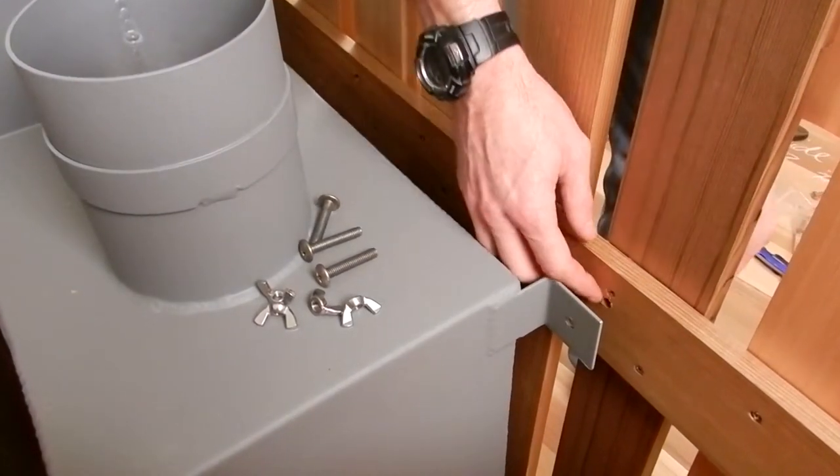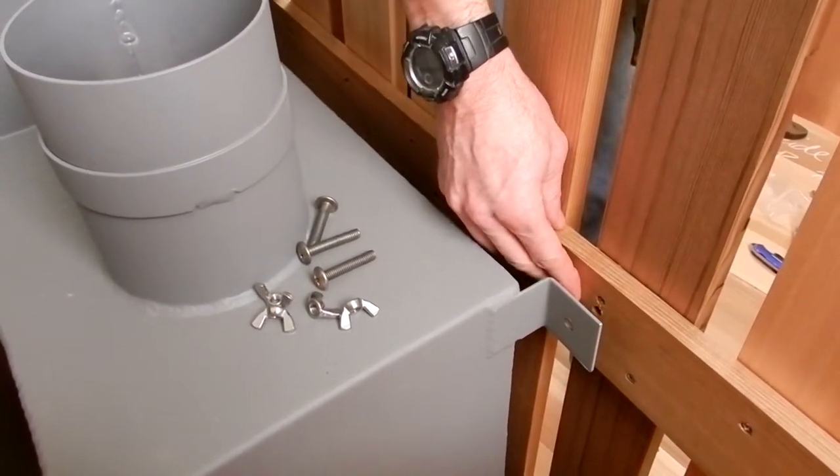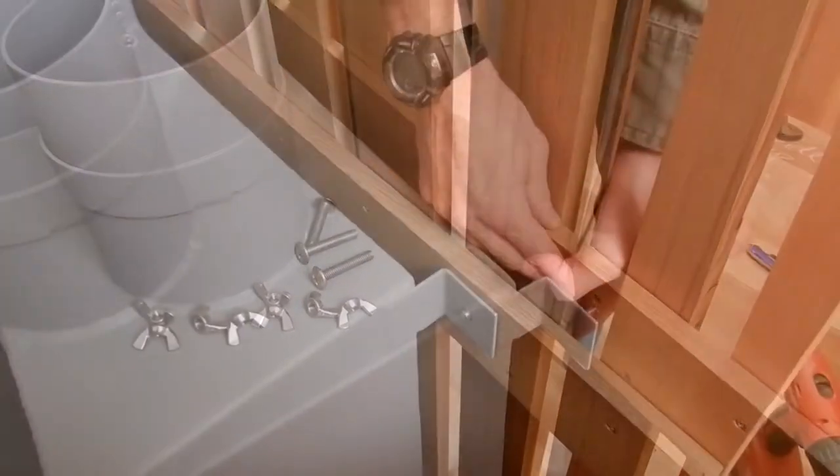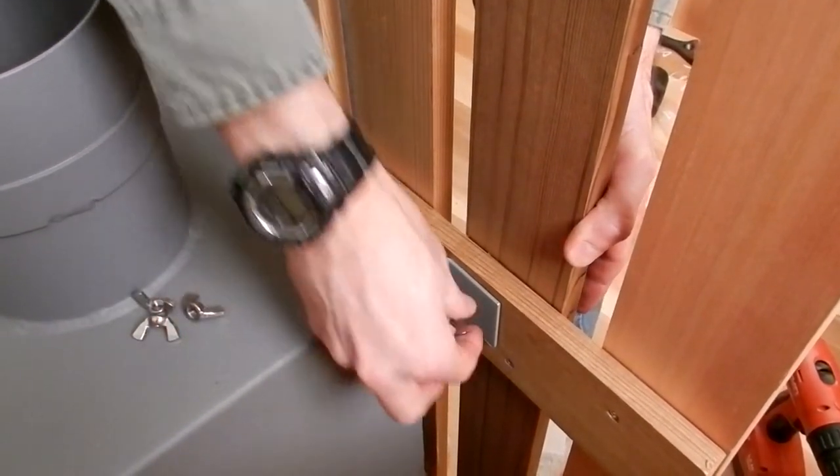Insert each bolt into the holes of the fence you just drilled and place the fence on the stove again. Tighten the wing nuts on the bolts and you are complete.